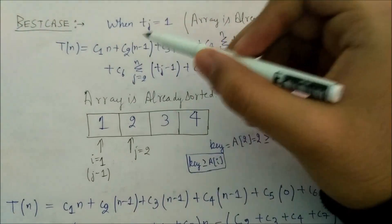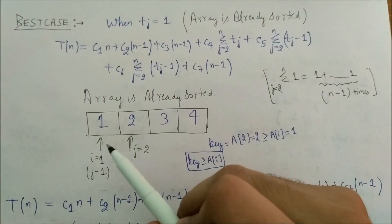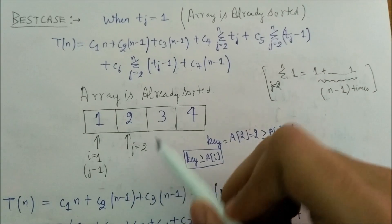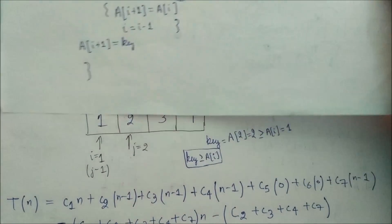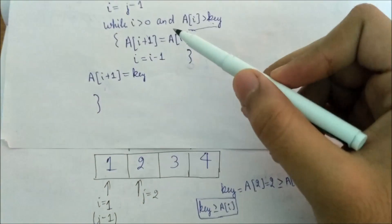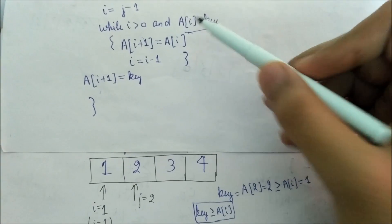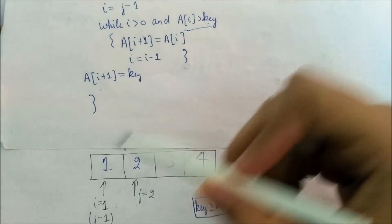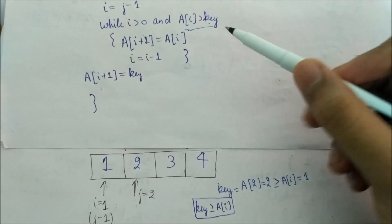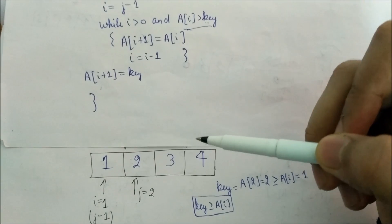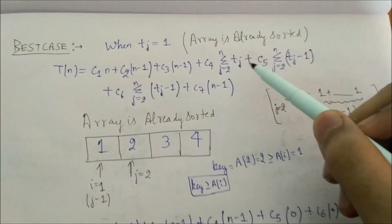The best case occurs when the array is already sorted. For each j there is only one comparison in the while loop: when j=2, we compare a[i] with key, and since the array is already sorted a[i] is never greater than key, so the while loop breaks immediately. Therefore tj = 1 for each j.